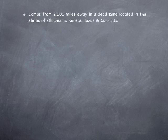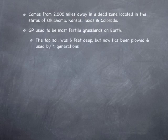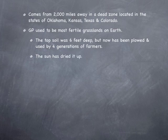The storm came from 2,000 miles away in a dead zone located in the states of Oklahoma, Kansas, Texas, and Colorado. The Great Plains used to be the most fertile grasslands on earth. The topsoil was six feet deep but had been plowed and used by four generations of farmers. The sun had dried up this ground.